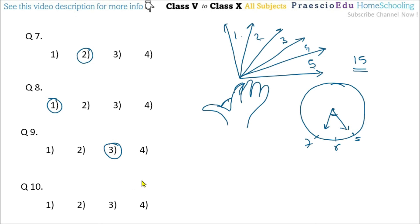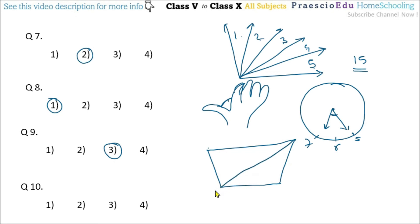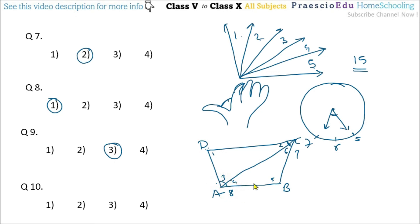Question number 10: in a figure, quadrilateral ABCD is divided into two triangles by drawing diagonal AC. Each triangle has three angles — triangle ADC and triangle ABC. Counting all angles: 1, 2, 3, 4, 5, and 6 individual angles, plus 2 combined and 3-and-4 combined gives a total of 8 angles. Eight is given in option number 3. Thank you.